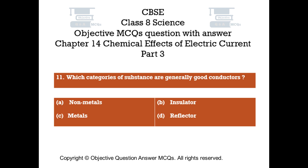Question number 11. Which category of substances are generally good conductors? Option A: Non-metals. Option B: Insulators. Option C: Metals. Option D: Reflectors.